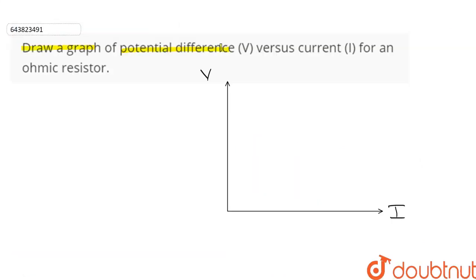Draw a graph of potential difference V versus current I for an ohmic resistor.